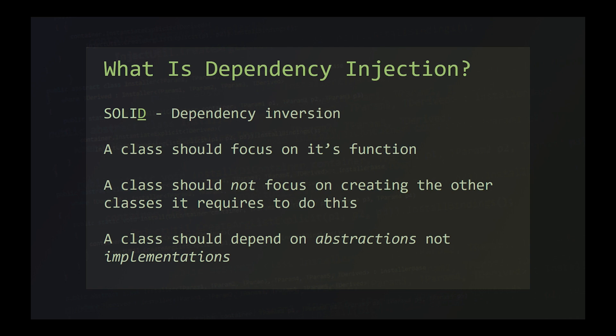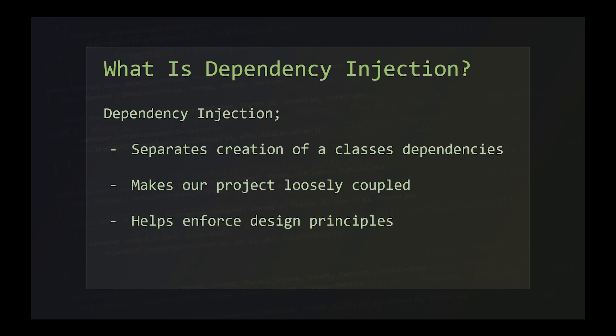Classes should really depend on an abstraction, not a concrete implementation of their dependencies. For example, class A should depend on an interface that class B implements, rather than class B itself. Dependency injection has a few main objectives. It removes the requirement that a class has to know how to construct and configure its dependents. This makes the project loosely coupled, with our classes not directly depending on each other.